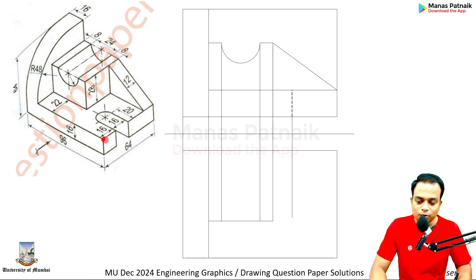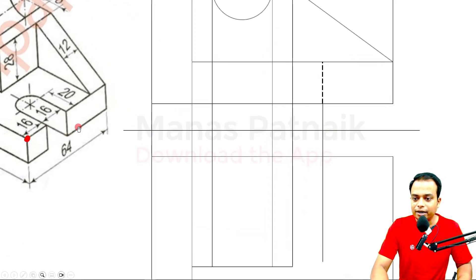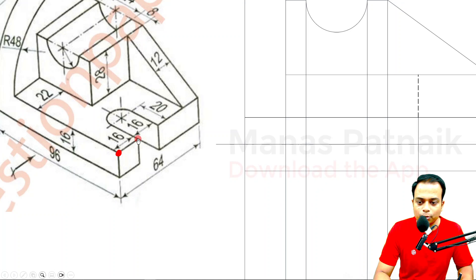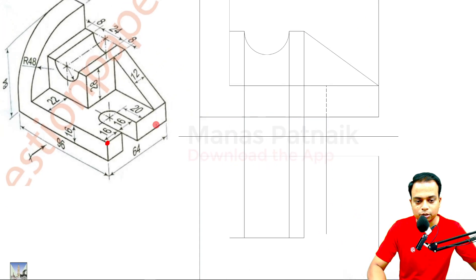As far as this portion is concerned from over here, what we can do is simply make a point at a distance of 16, and then from here again make a point at a distance of 16. Let's do it.